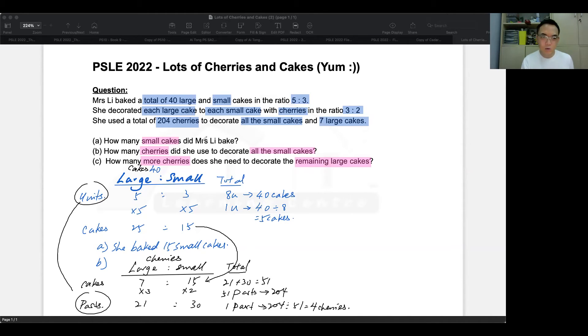So let's try to answer the question. The question says how many cherries did she use for all the small cakes? I know that she has 15 small cakes and she used a total of 30 parts of cherries to decorate all the small cakes. So if that is the case, then all I have to do is to take 30 and multiply that by four because four is one part. This is 30 parts.